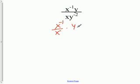And it's a product now of x to the negative 1 over x times y over y to the negative 2.